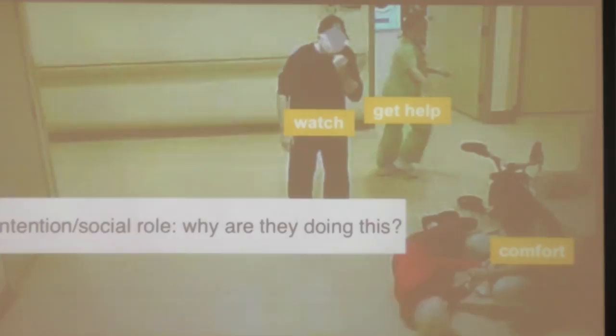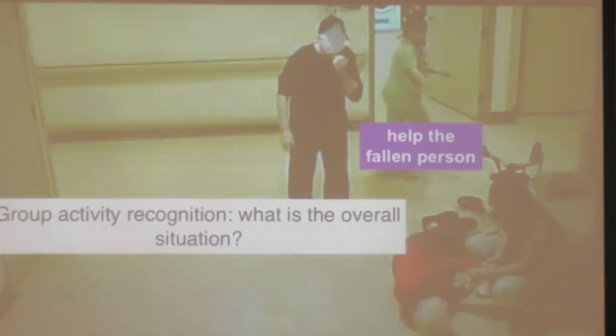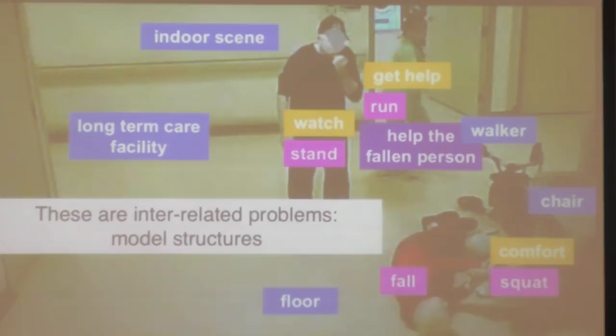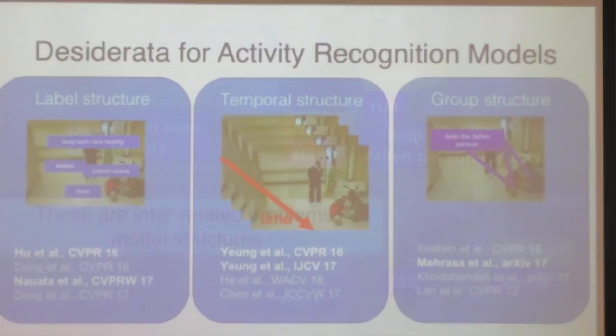At a holistic level, we often call this group activity recognition — what is the overall situation? For example, these are a set of people trying to help a fallen person. All of these ingredients are interrelated: I want to tag what objects are in the scene, where the people are, what they're doing, what group activity they're engaged in. That's why I'm going to talk today about structured models for understanding images and videos, and how we can use those for activity recognition.